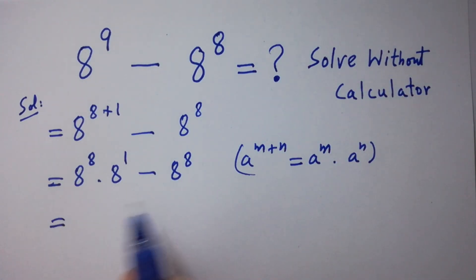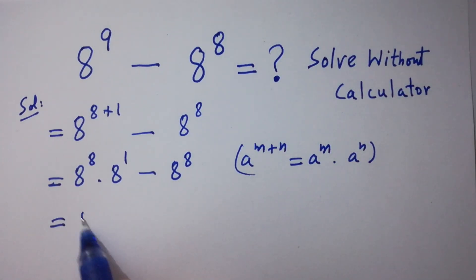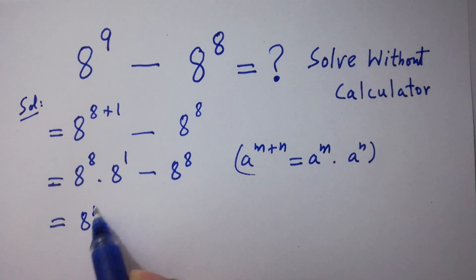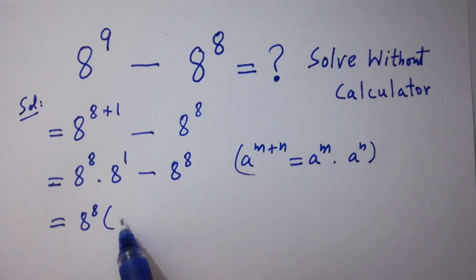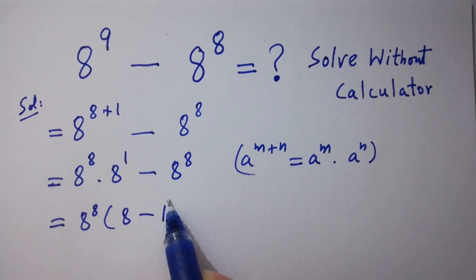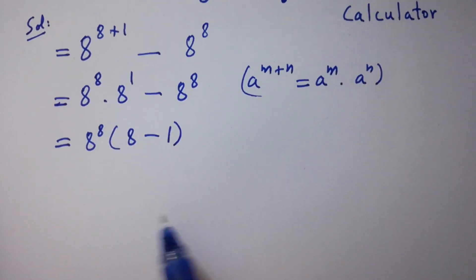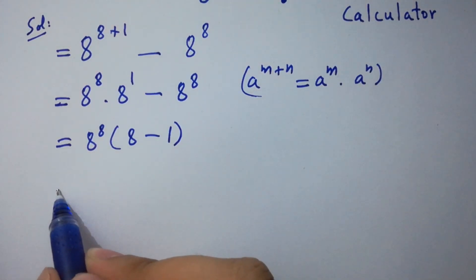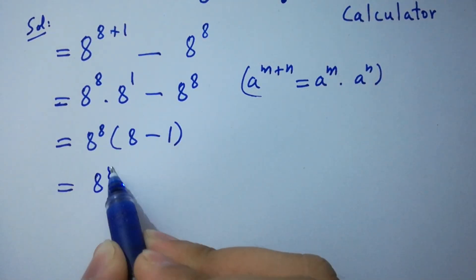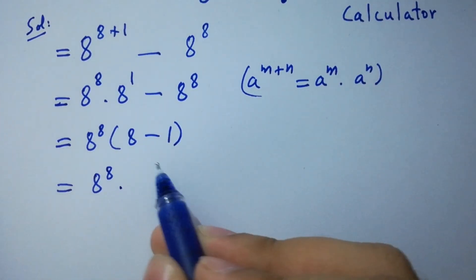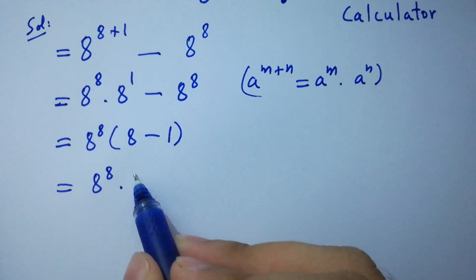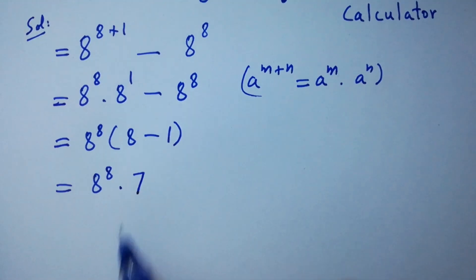Here, 8 to the power 8 can be common. We have here 8 minus 1. So 8 to the power 8 times 8 minus 1 is 7.